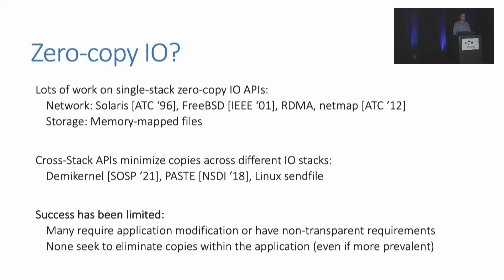Copies are very prevalent — what can we do about this? I/O copies are an old problem. Starting in the 90s, operating systems like FreeBSD and Solaris tried to provide zero-copy socket APIs. More recently, systems like RDMA and NetMap have tried to provide zero-copy networking solutions. On the storage side, memory-mapped files have long provided a zero-copy solution. There has also been work on cross-stack APIs, including research projects like DemiKernel and Paste, as well as some kernel support in the Linux sendfile interface.